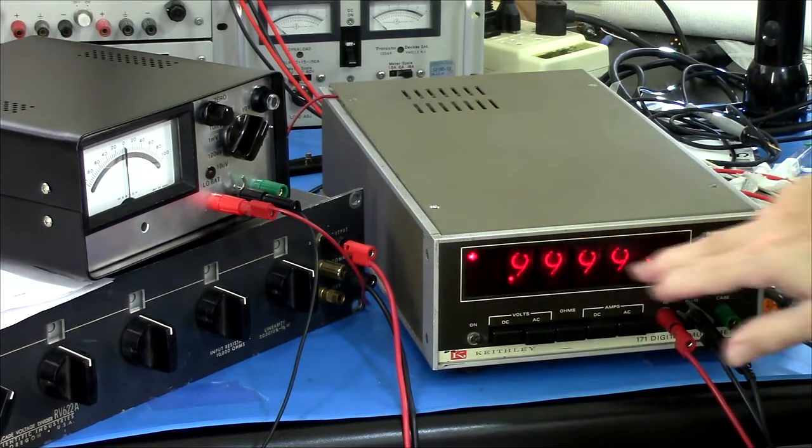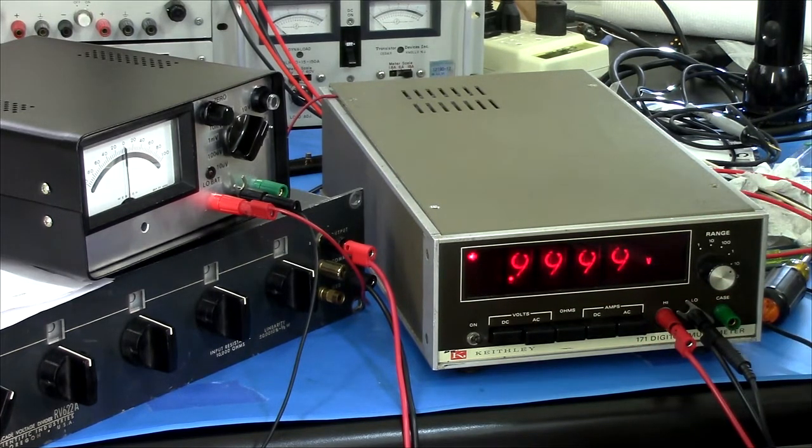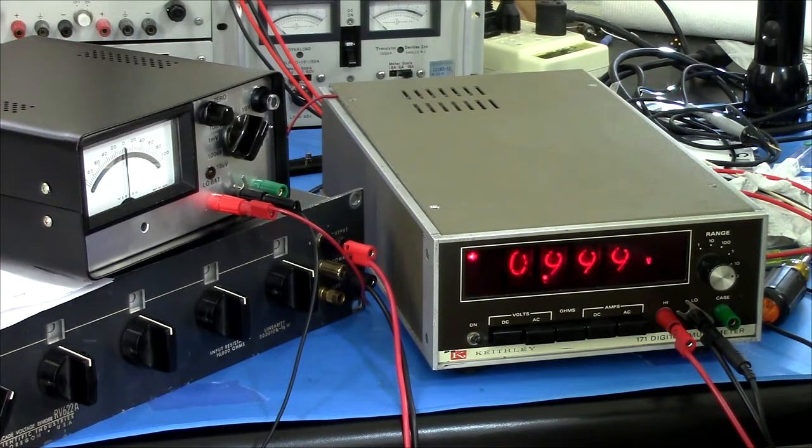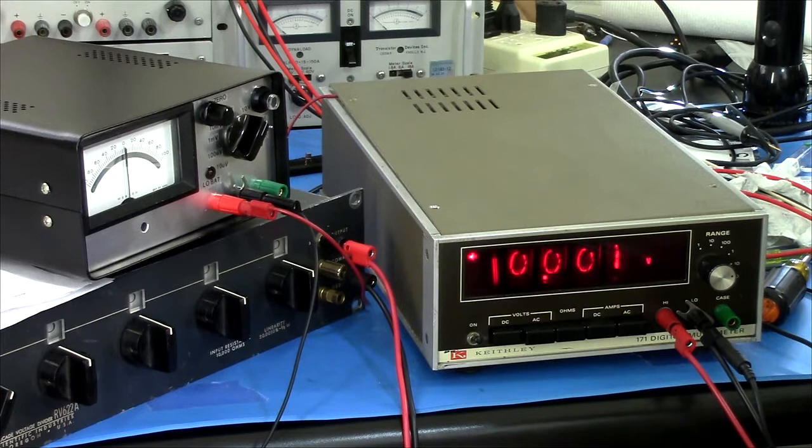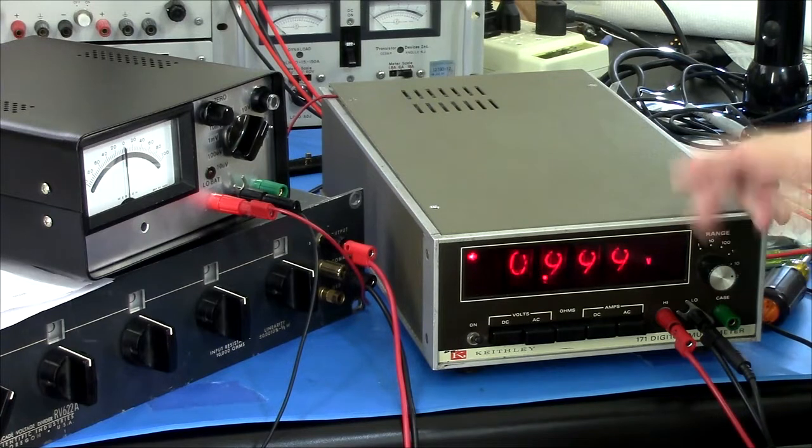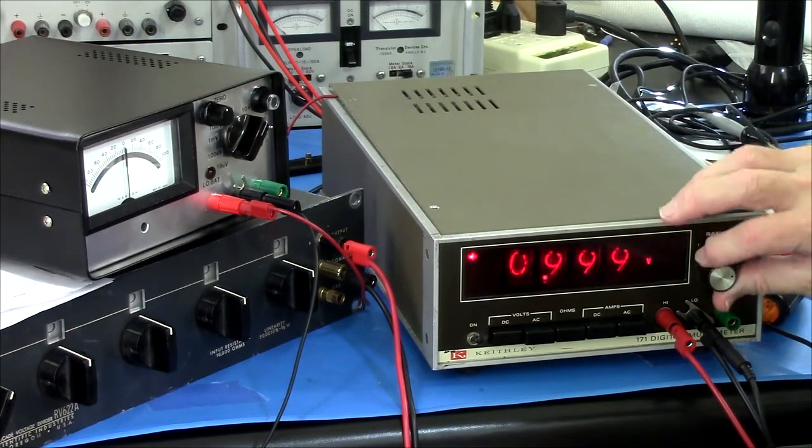I'm on the one-volt scale, I'm putting one volt in. That's pretty good right there, 0.9999, within one count. If I go to the 10-volt scale, I can give it 10 volts in. It's within one count there. So we'll go back to one. There's one volt on the 10-volt scale, it's within a count or two. That's pretty good.